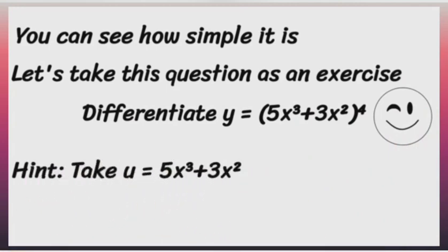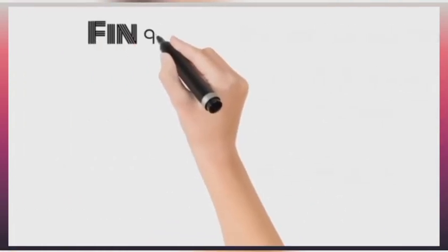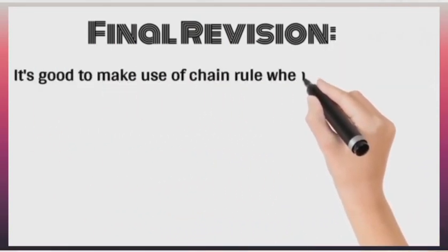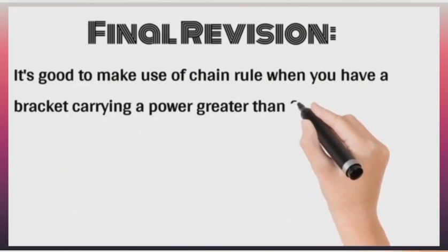This is also a very simple question because you can just replace your u with what is in the bracket. Now, it is good to make use of chain rule whenever you have a bracket carrying a power greater than 2 because you are just going to replace everything in the bracket by what? By your u.